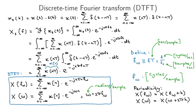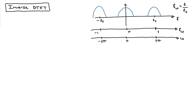We're now going to derive the inverse discrete-time Fourier transform. We want to be able to go from the spectrum back to our original signal x[n], so we need to derive the inverse DTFT.